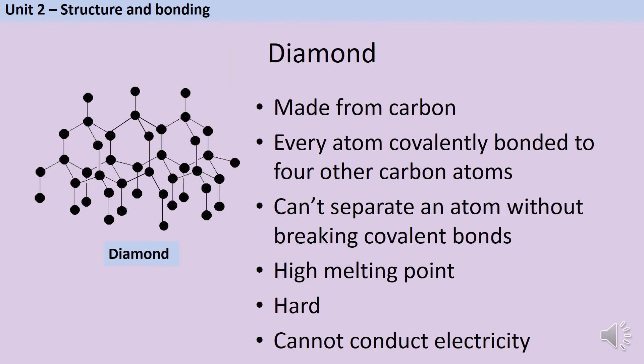Diamond is made from carbon and in a piece of diamond every single carbon atom is covalently bonded to four other carbon atoms. It's not possible to separate out one atom without breaking covalent bonds.